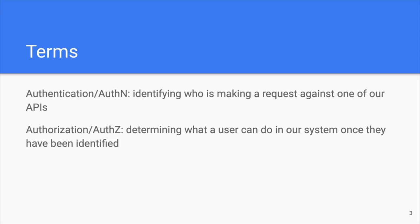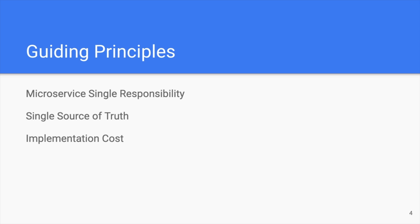In evaluating these architecture decisions around authentication and authorization, I will use three guiding principles. One, the microservice single responsibility principle, meaning that a microservice should be responsible for doing approximately one thing in one domain. Two, the single source of truth principle, that every piece of information in our microservice system should be managed authoritatively by a single service. And finally, I'll be looking at things through the lens of implementation cost — that is, if you're a startup strapped for engineers, which of these solutions may work best for you?